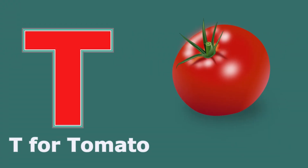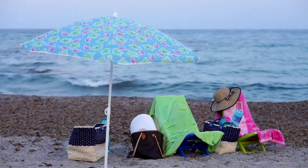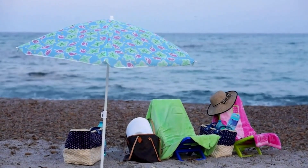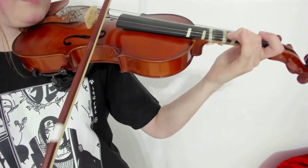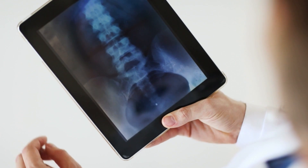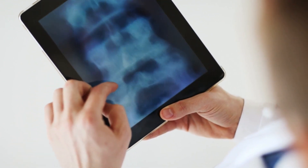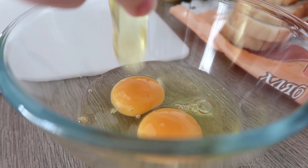T for Tomato. U for Umbrella. V for Violin. W for Water. X for X-Ray. Y for Young. Z for Zebra.